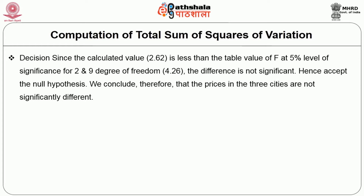Decision: since the calculated value is less than the table value of F at the 5% level of significance for 2 and 9 degrees of freedom, the difference is not significant. Hence, we accept the null hypothesis and conclude that the prices in the three cities are not significantly different.